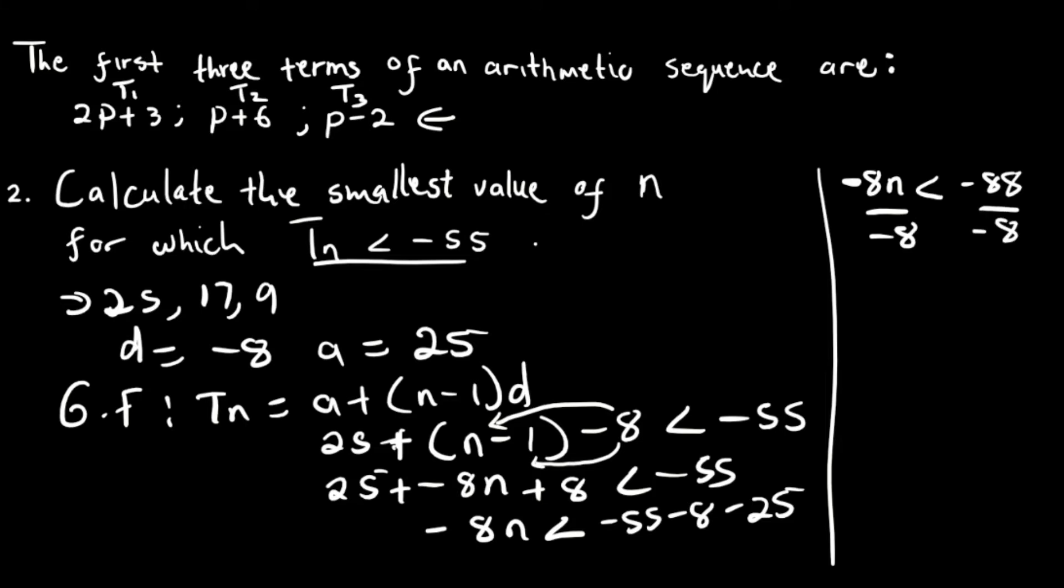And then you divide by minus 8, divide by minus 8. And so, just note that whenever you divide an inequality sign, it changes direction. So if you divided this here with a negative number, which is negative 1 in this case, it will change to being greater than. So here, the same thing is going to happen with this one here. It's going to change to greater than 11.